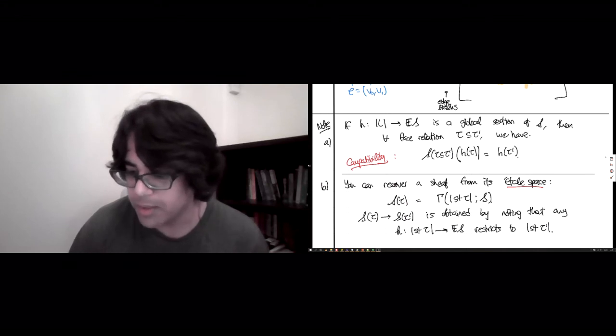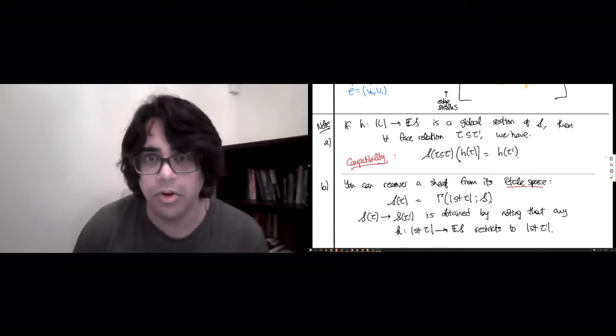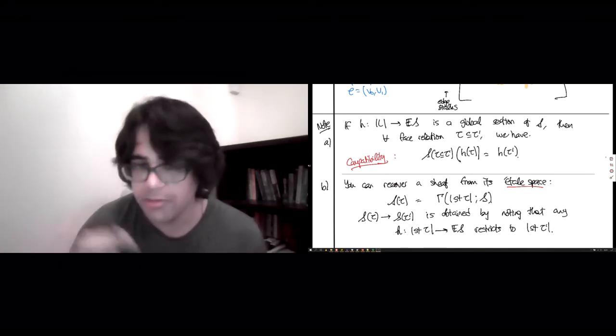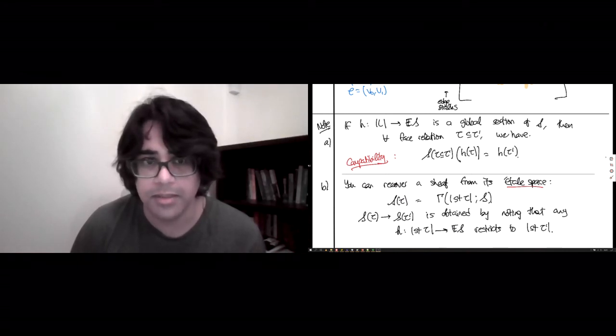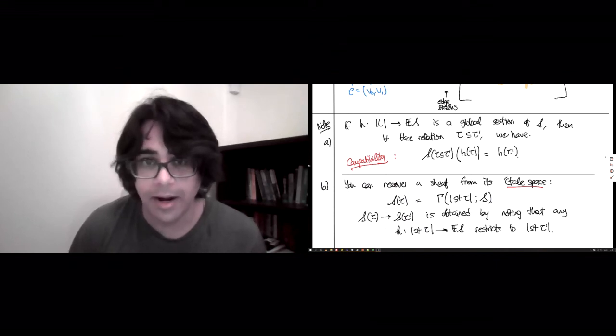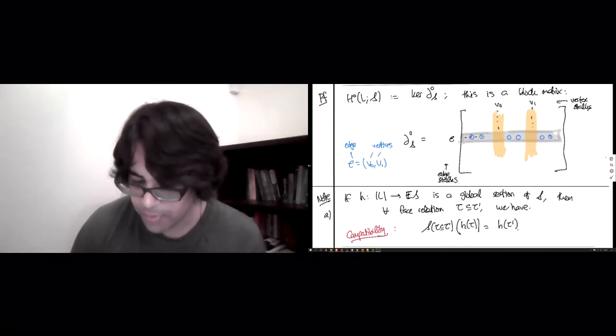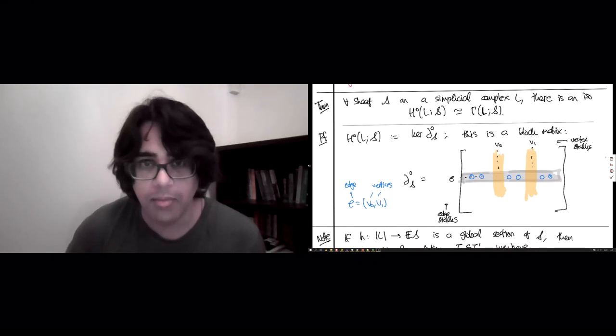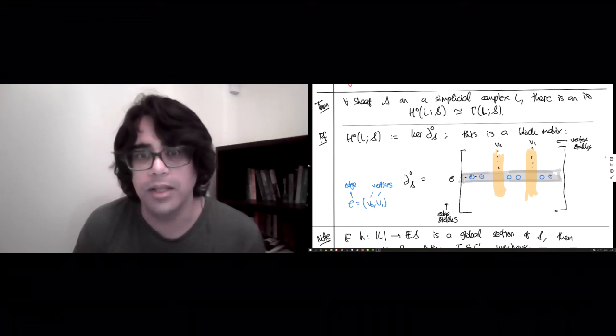So it's a completely equivalent way of looking at a sheaf, but it helps you understand a little bit about what zeroth cohomology is measuring. It's measuring the vector space of compatible assignments of stalks, of vectors and stalks to simplices in the underlying base space. So that's it for the étal space and our interpretation of H0, the zeroth sheaf cohomology. In the next lecture, we're going to look at various operations and sheaves from a categorical viewpoint. So I'll see you there.